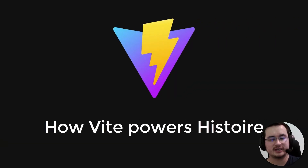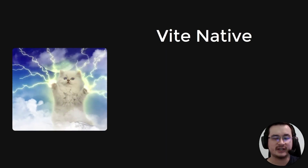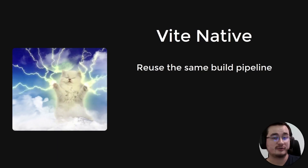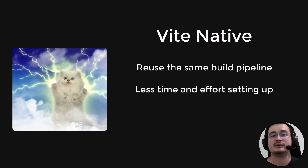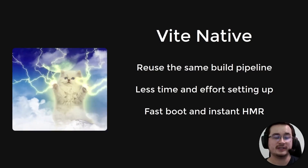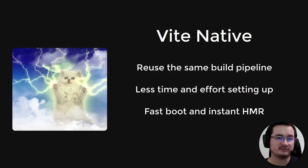Let's go to the main topic of the talk, which is Vite and how it makes Histoire possible. Histoire is a Vite-native tool, which means it basically reuses Vite from your Vue project instead of having an entirely new build pipeline to process your files. This has the great advantage of simplifying your setup and configuration, because you already have one. We can also take advantage of the amazing features provided by Vite, such as the very fast hot module replacement system.